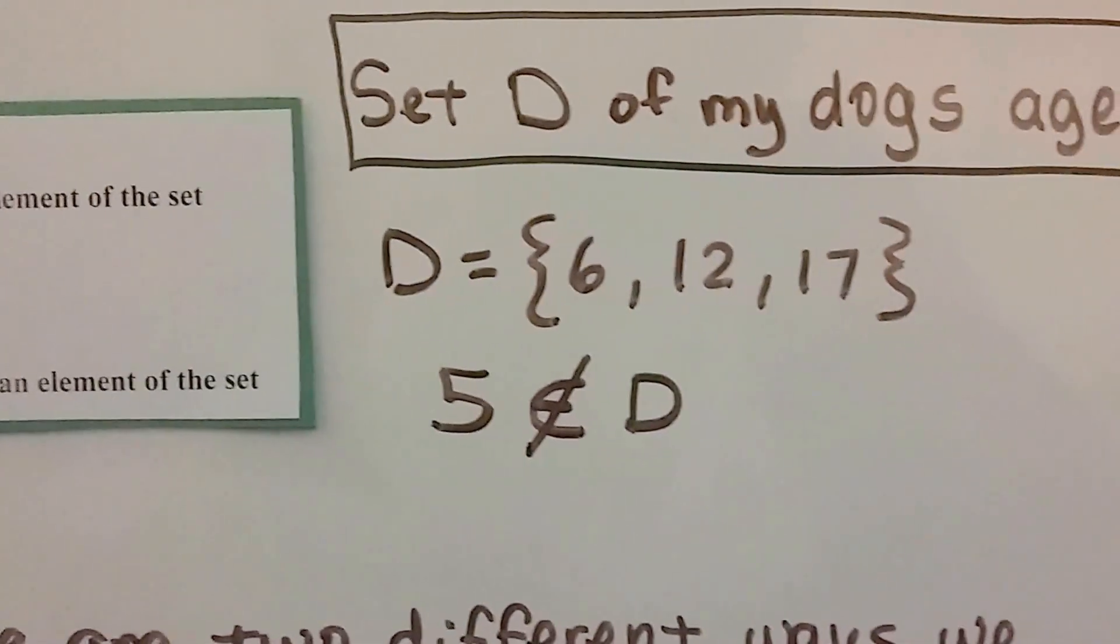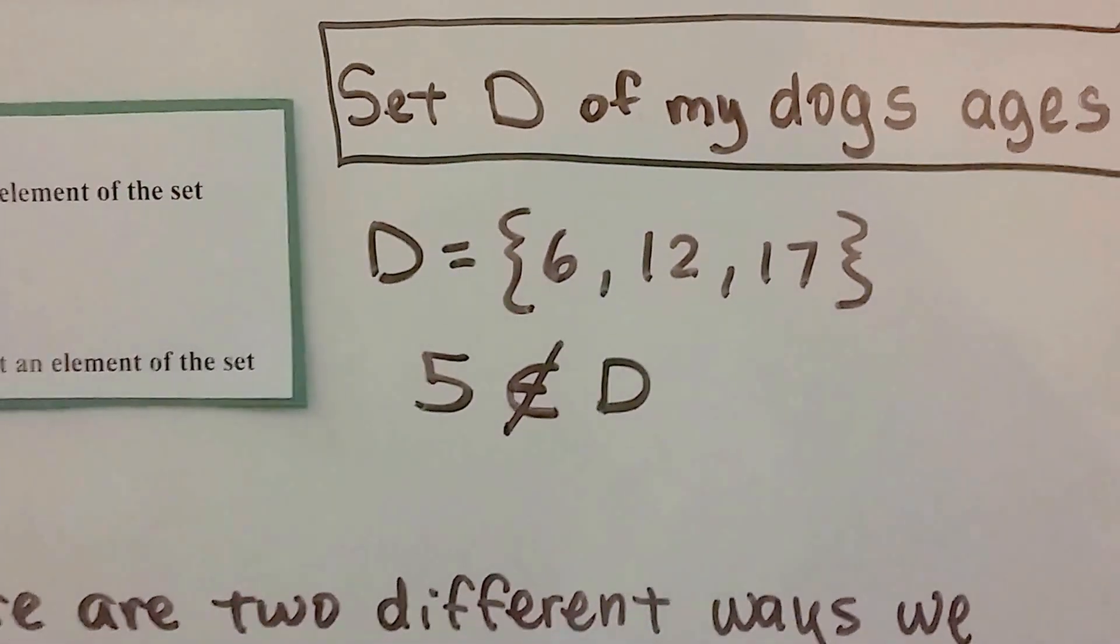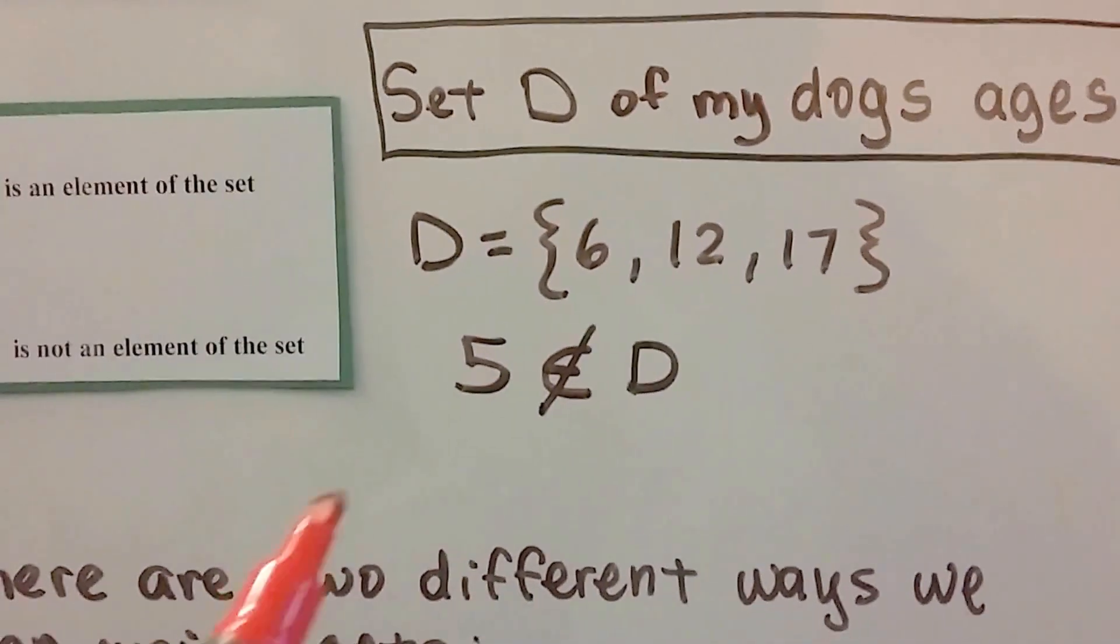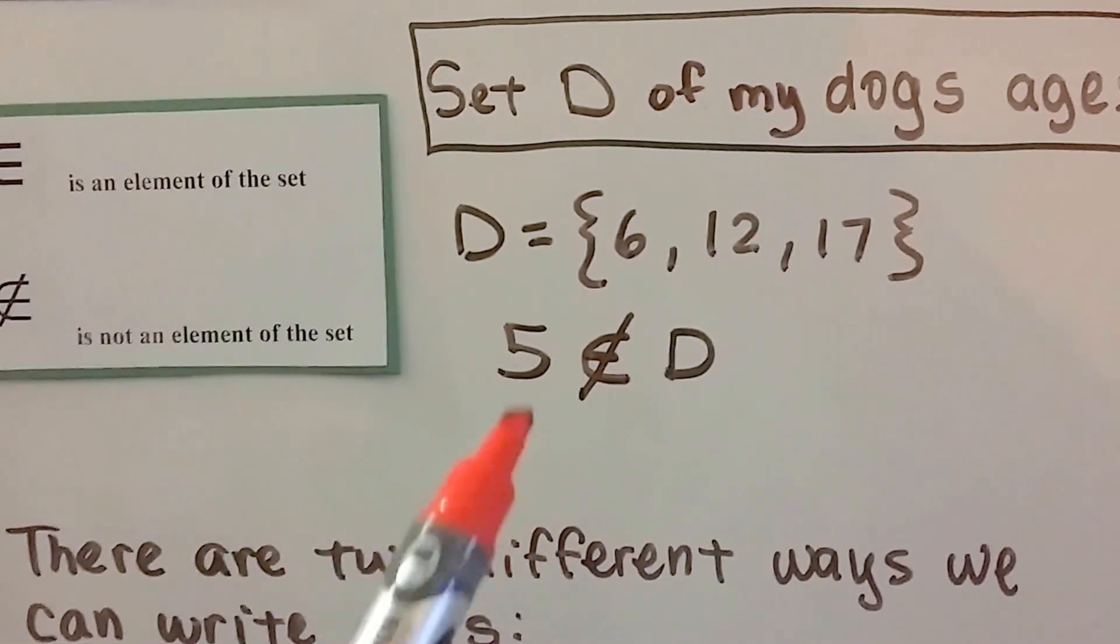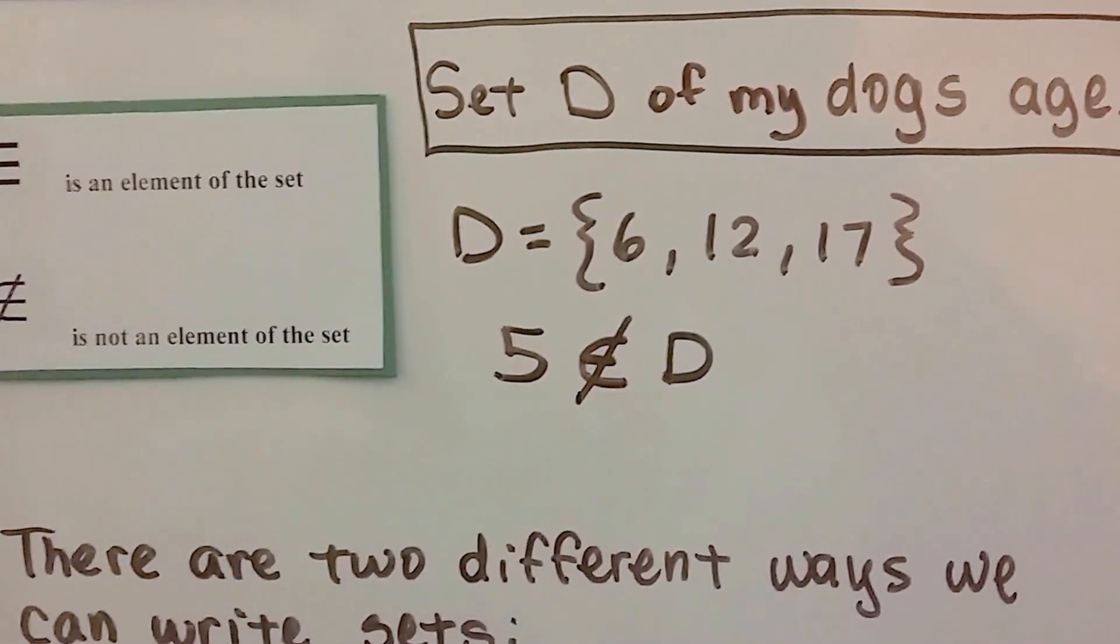So set D of my dog's ages would be D equals 6, 12, and 17 in the set braces, and because I don't have a dog that's 5 years old, 5 is not an element of D. See that?